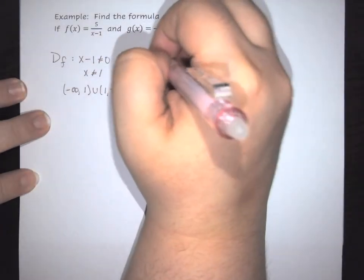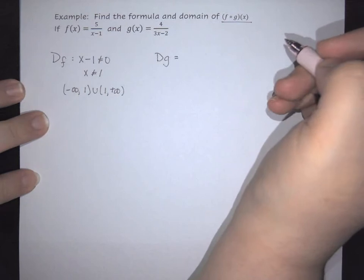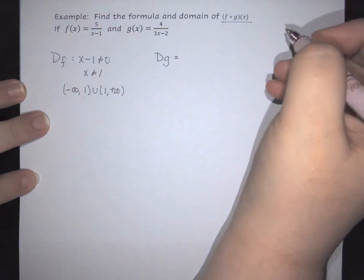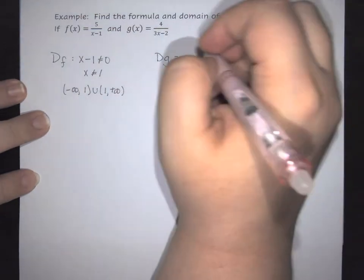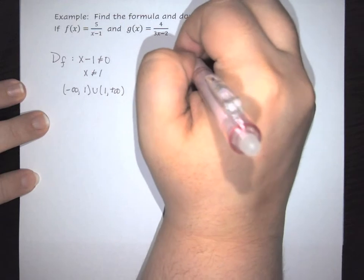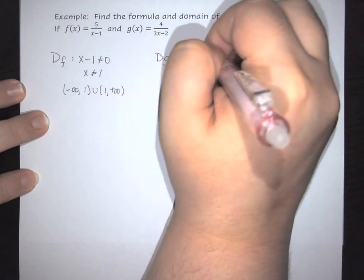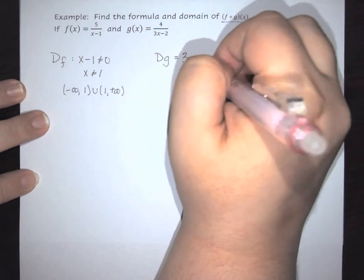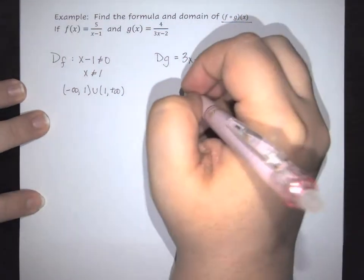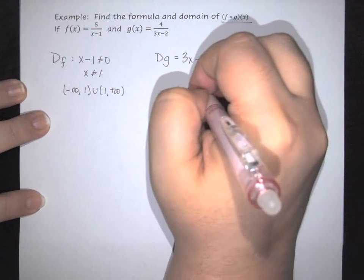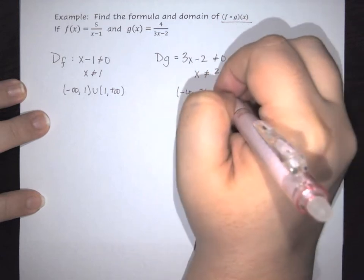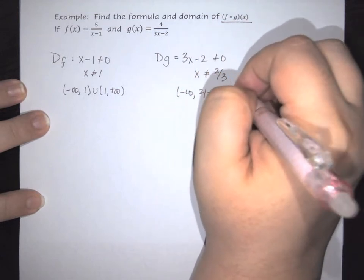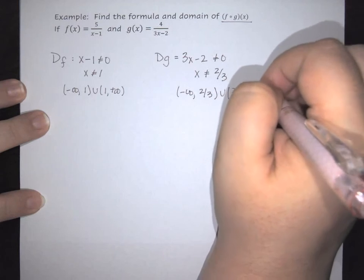We then have to find the domain of g, and this is going to follow the same rule because it is also a rational. So here this is going to be that 3x minus 2 cannot be 0, so x cannot be 2 thirds. That makes its domain negative infinity to 2 thirds union 2 thirds to positive infinity.